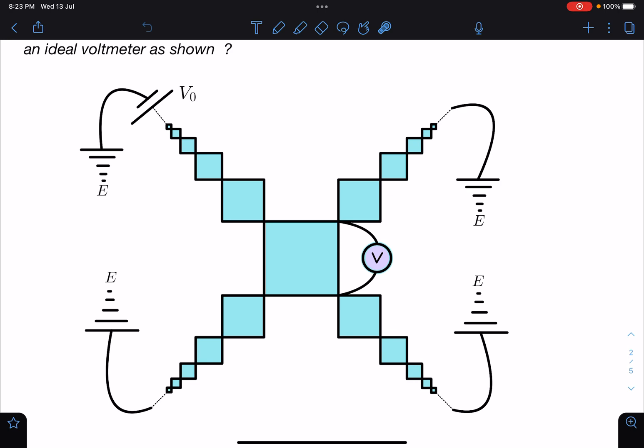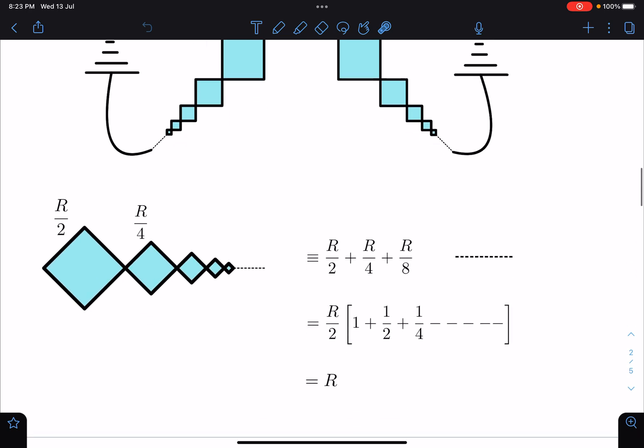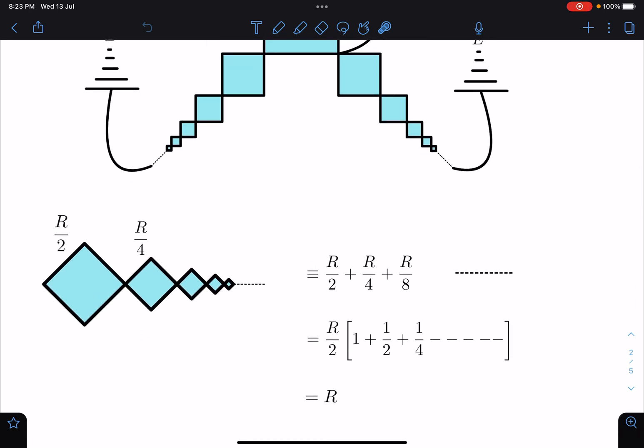So here what we are going to do is separate one of the branches and calculate the resistance of this part. As you can see, this branch is R by 2, this is R by 2. Combined they will give R with this R here, R and R in parallel, so it will become R by 2. Similarly here, this resistance was R by 2 and overall in parallel it will become R by 4, here it will become R by 8 and so on.